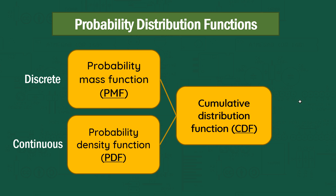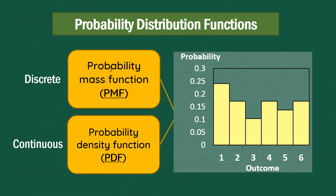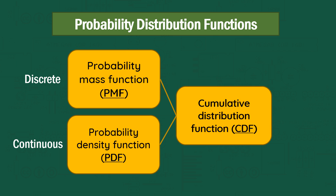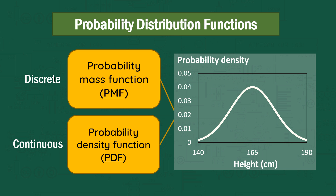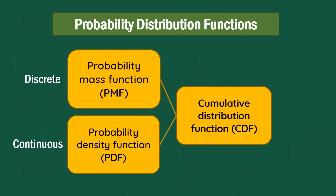Straight off the bat I just need to get some terminology out of the way. Hopefully you're familiar with the concept of discrete and continuous variables. For discrete variables, they have something called a probability mass function — a simple way of saying the probability of each discrete outcome. That's given the three-letter acronym PMF, and this compares to the PDF, or probability density function, which we use for continuous variables. It's similar to the probability of particular outcomes on a continuous distribution, but slightly different, so we call it the probability density.